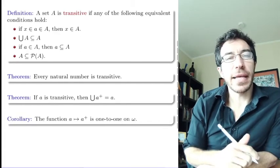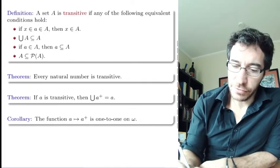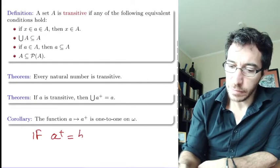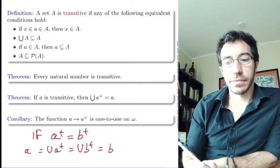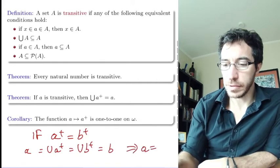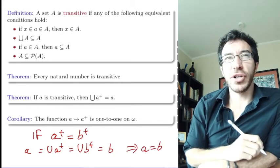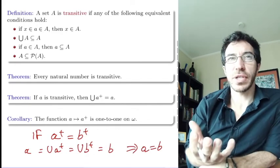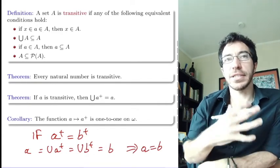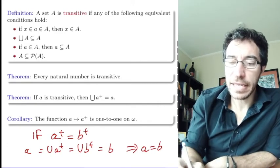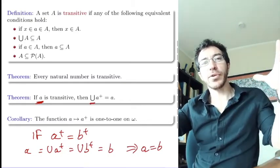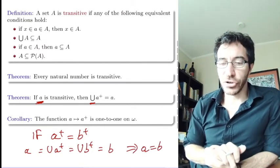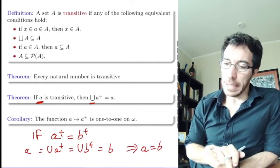As a corollary, the successor function is one-to-one. If A-plus equals B-plus, then the union of A-plus equals the union of B-plus. But by our result, the union of A-plus is A and the union of B-plus is B, so A equals B. The successor function is one-to-one not just on omega but on all transitive sets, and the union operation gives us an inverse.